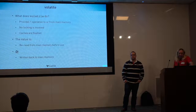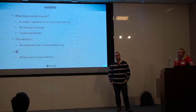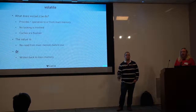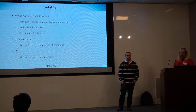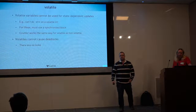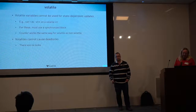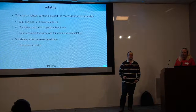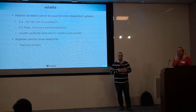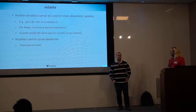What does volatile do? It provides one operation to or from main memory, with no locking involved. If you read a volatile value, it always goes to main memory and gives you the latest value. If you write it, it writes through to main memory and keeps the value visible across all cores. But be careful: volatile doesn't solve all problems. For instance, doing V++ is actually multiple operations — a load and store — so you'd need a synchronized block. Volatiles can't cause deadlocks because there are no blocks, but they're a lot weaker than synchronized.